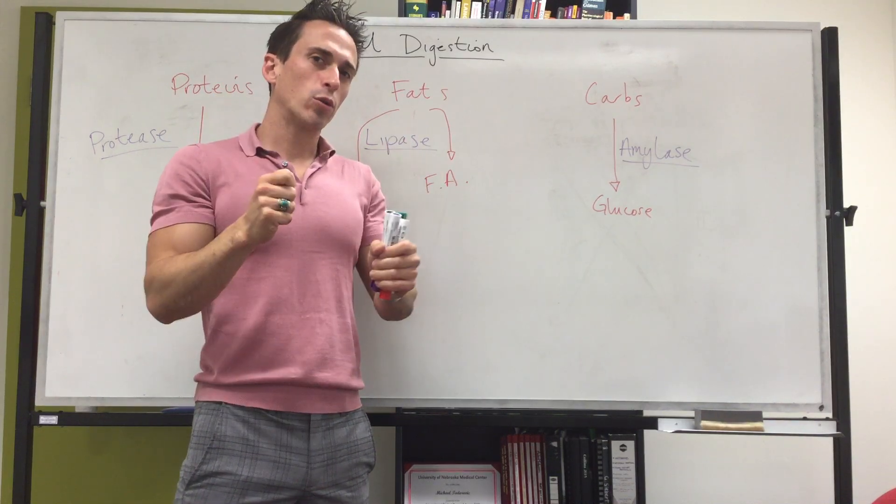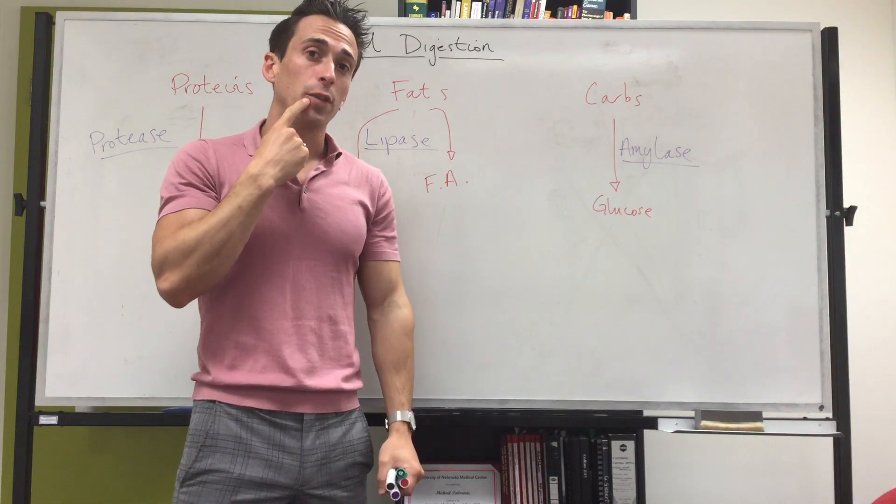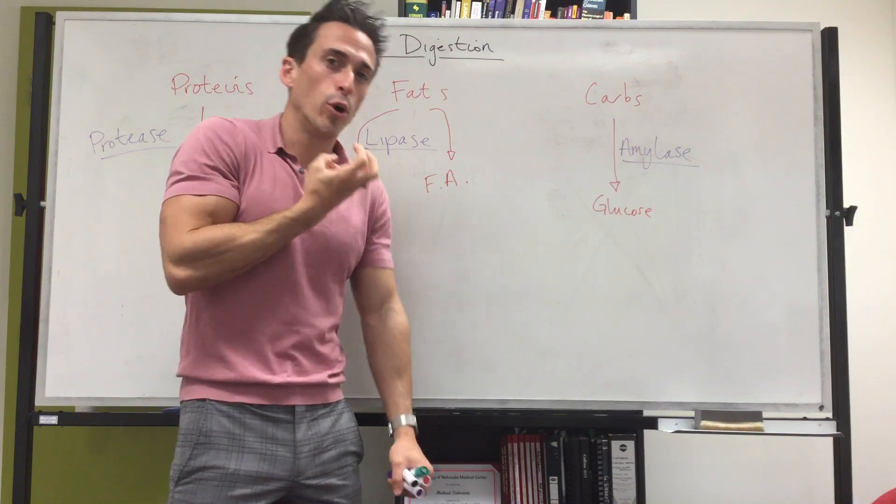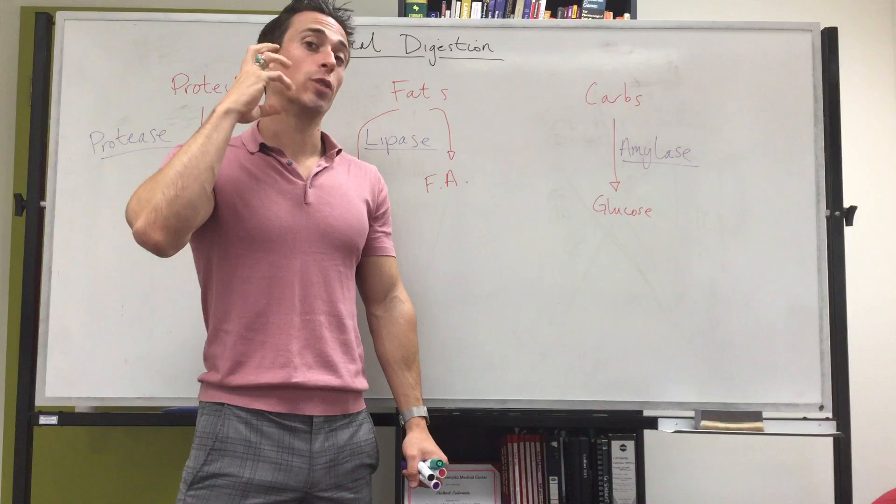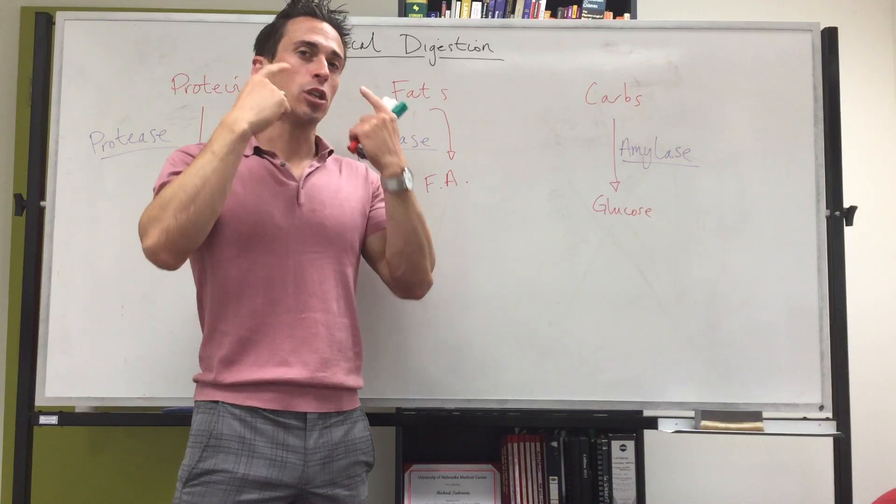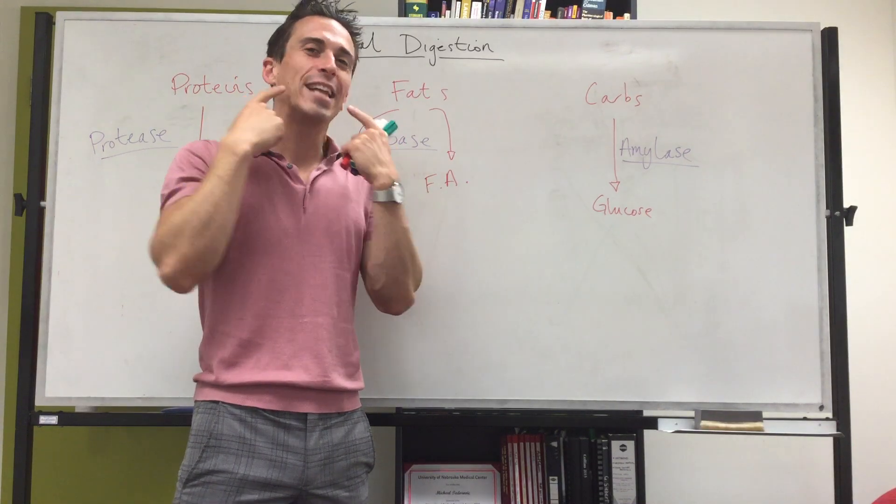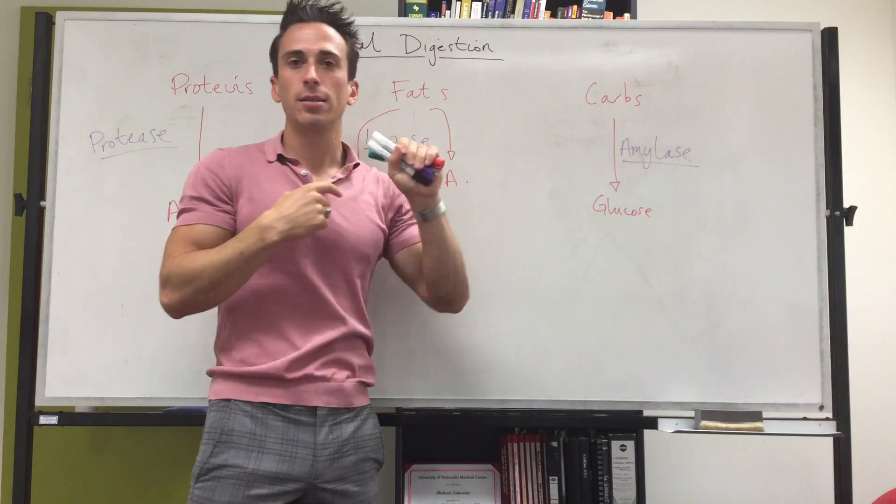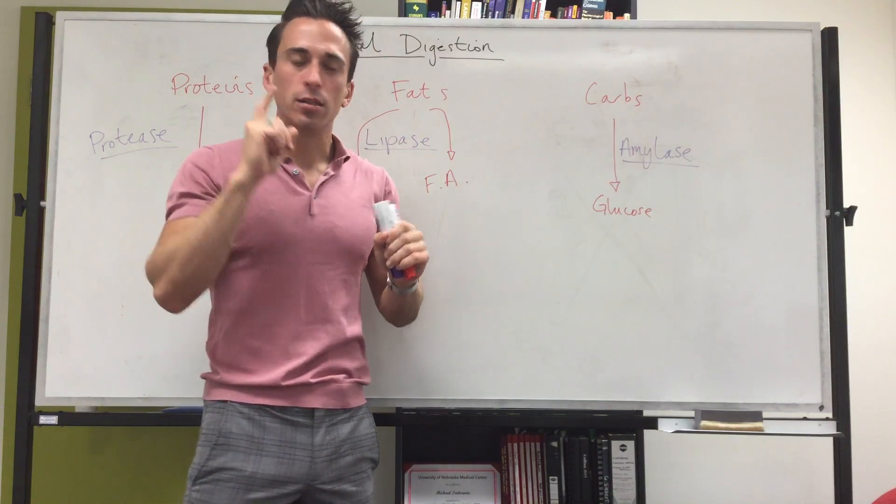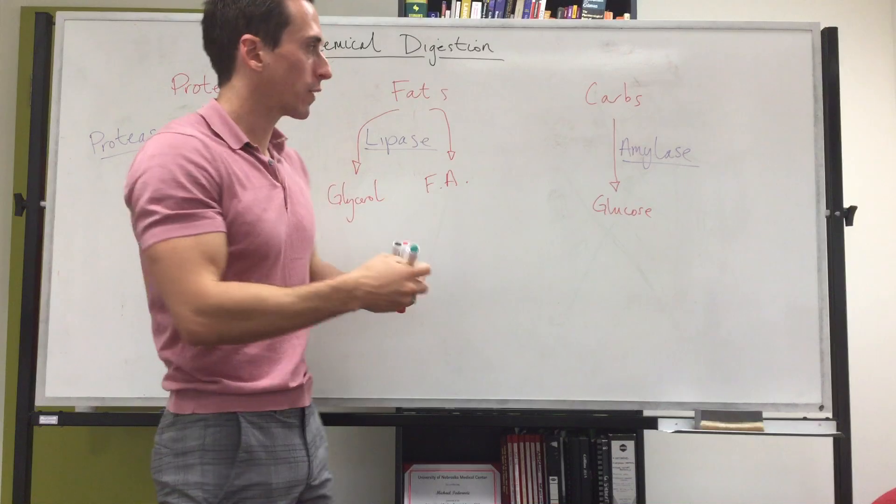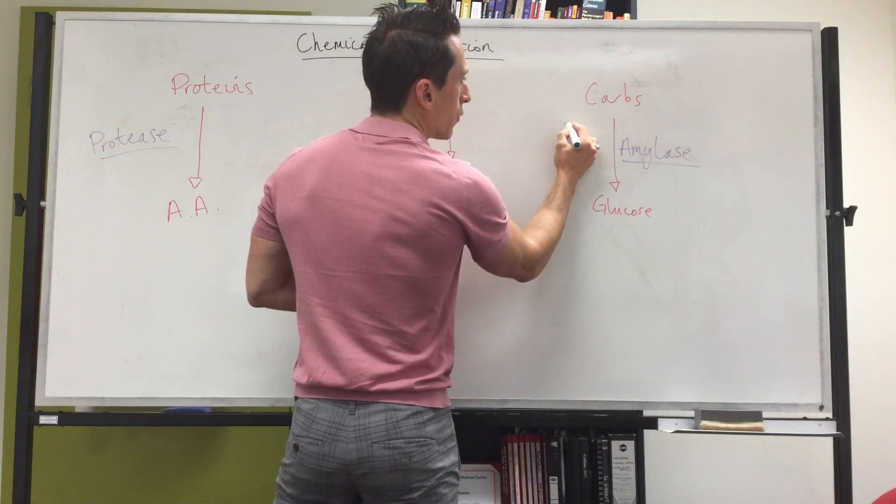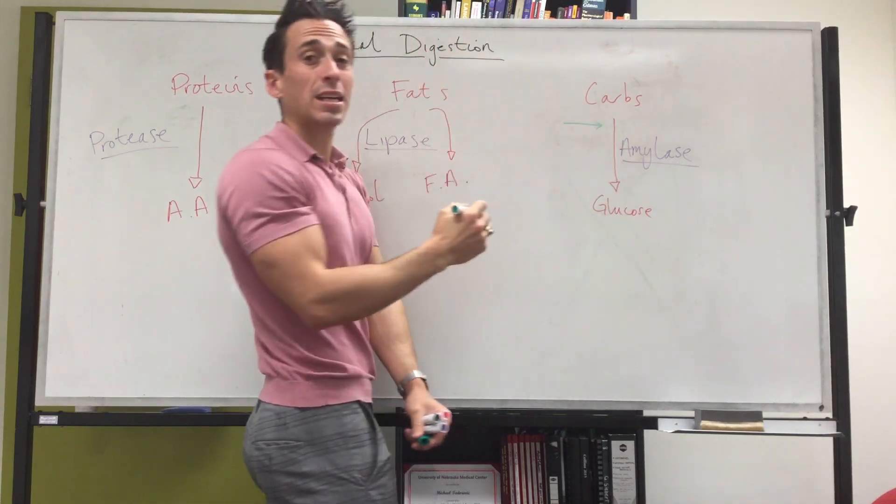But when it comes to chemical digestion, let's start at the mouth. So you take a big bite of the burger and as you chew—that's mechanical digestion—your salivary glands are going to release an enzyme called amylase. Therefore, the mouth is the first site of chemical digestion, and it's the first site of chemical digestion for carbohydrates.